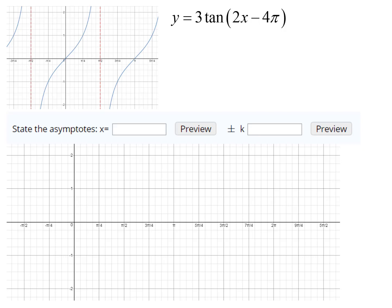Here we have y equals 3 tangent of 2x minus 4π and the first thing we want to do is find the period. The period for tangent, typically if it was tangent x, is π, but this has a 2 in front so it's going to be π over 2.